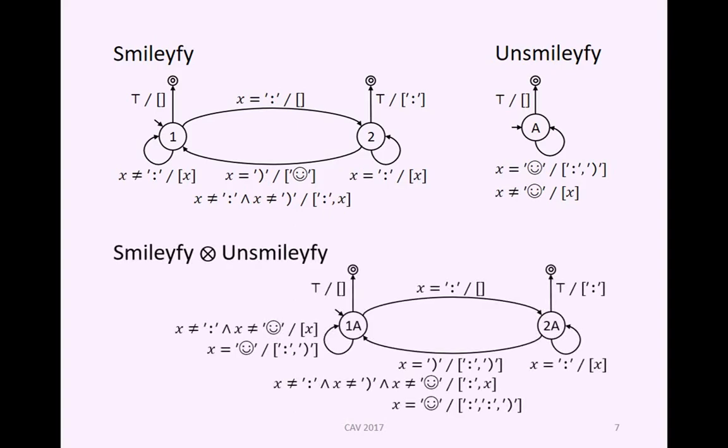The fusion looks like this. The state space is a product of the state spaces of the components. Essentially, whenever Smileyfy produces output, then Unsmileyfy is run on that output. We can most concretely see that here in this transition, which is a fusion of this transition which produces the smiley character from Smileyfy, and Unsmileyfy's unpacking transition, which has now been applied to this input list here. This is what we want to minimize, or reduce at least.